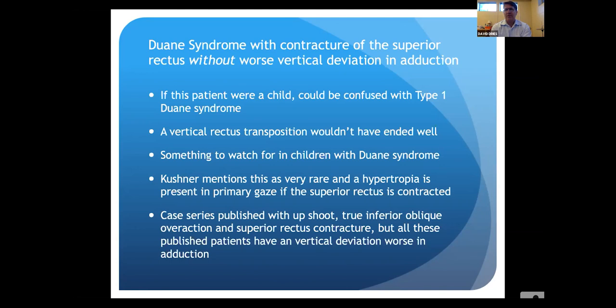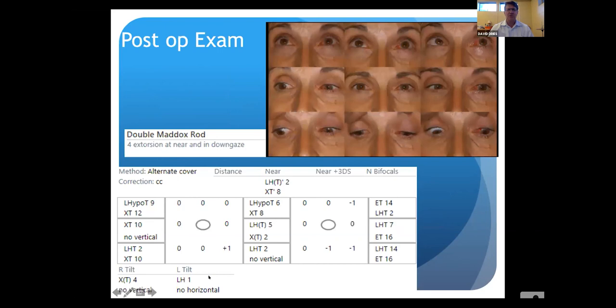A more outdated, traditional way of treating Duane syndrome is to recess the medial rectus only, which helps with abnormal head position. But the problem is you do reduce adduction quite a bit. If you look at our patient, her esotropia in primary gaze is well-controlled, but in right gaze she develops an exotropia. With vertical rectus transposition, that's minimized. So it's a good procedure.